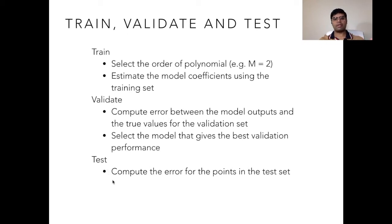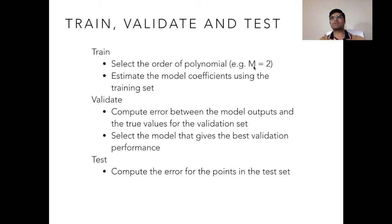Finally, you compute the error for the points in the test set. This is the general model selection criteria: split your available input-output pairs into training, validation, and test sets. Train the parameters on the training set, compute the error on the validation set, and then select the model. In the first iteration you use M equals 2 — a second order polynomial — compute a certain error. Then you change M to 3, compute the error on the validation set again. By doing so, you get validation errors for each candidate value of M, and you select the M that gives minimum validation error. Once you have selected the polynomial order, you also know the corresponding weights from training, and you use that model to evaluate performance on the test set.